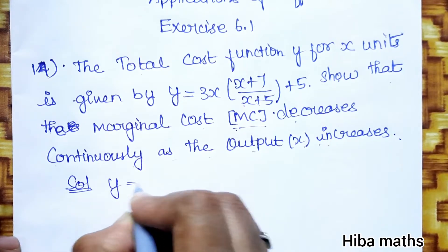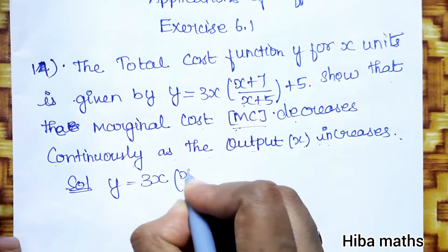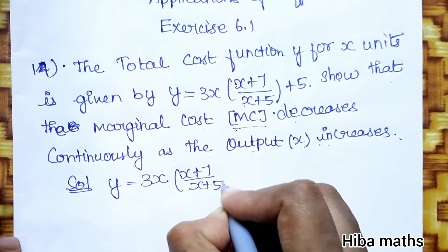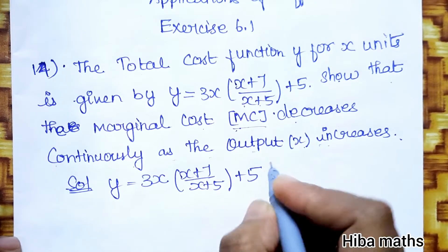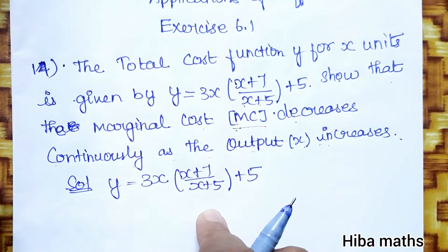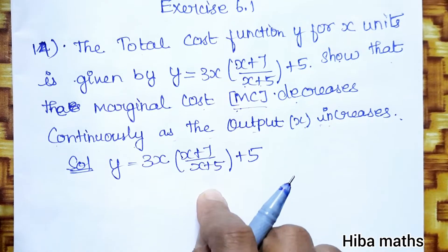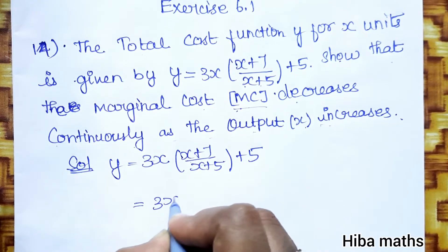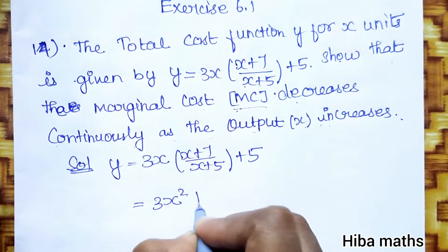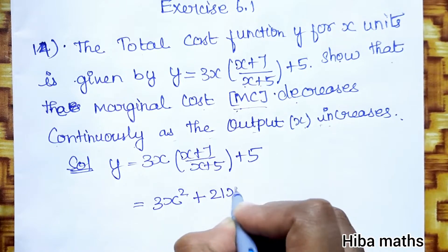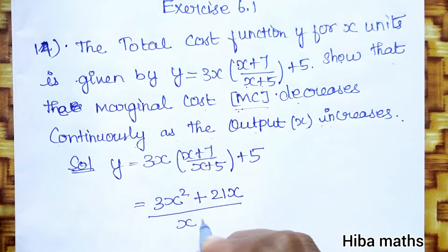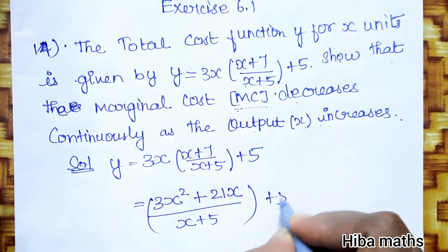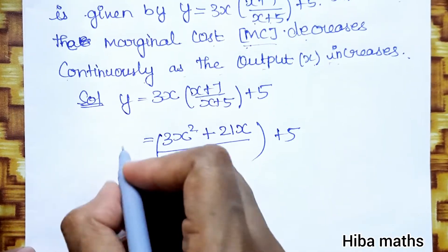y is given by y equals 3x times (x plus 7) divided by (x plus 5), plus 5. We multiply out: 3x into x gives 3x squared, and 3x times 7 gives 21x, so y equals (3x squared plus 21x) divided by (x plus 5), plus 5.